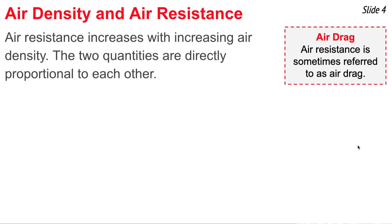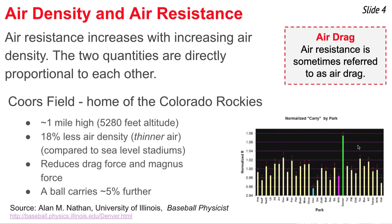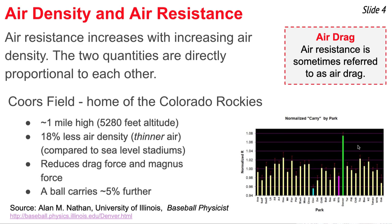If air resistance results when objects try to travel through air, then it makes sense that air resistance increases when you have more dense air. Baseball fans are very familiar with this, because Coors Field is the home of the Colorado Rockies. It's located about a mile above sea level, where the air is much thinner. This thinner air results in less air resistance and causes baseballs to travel further.